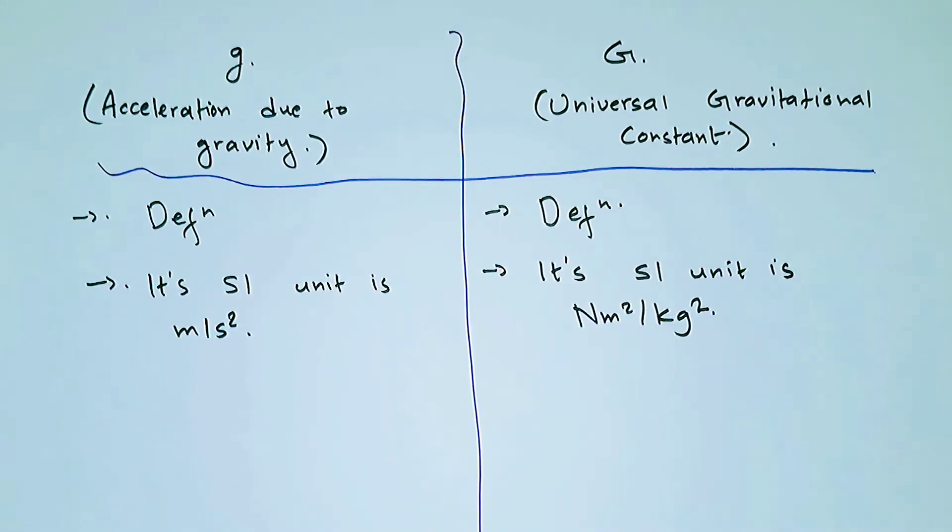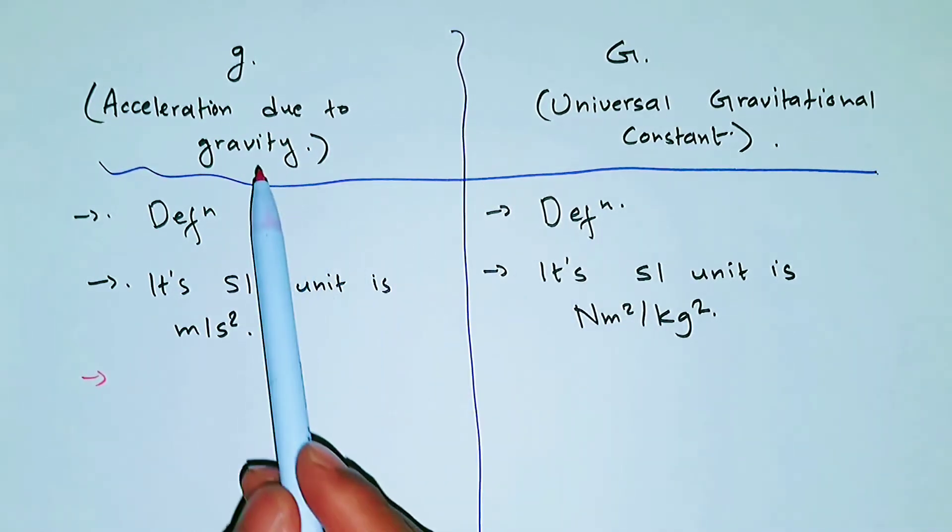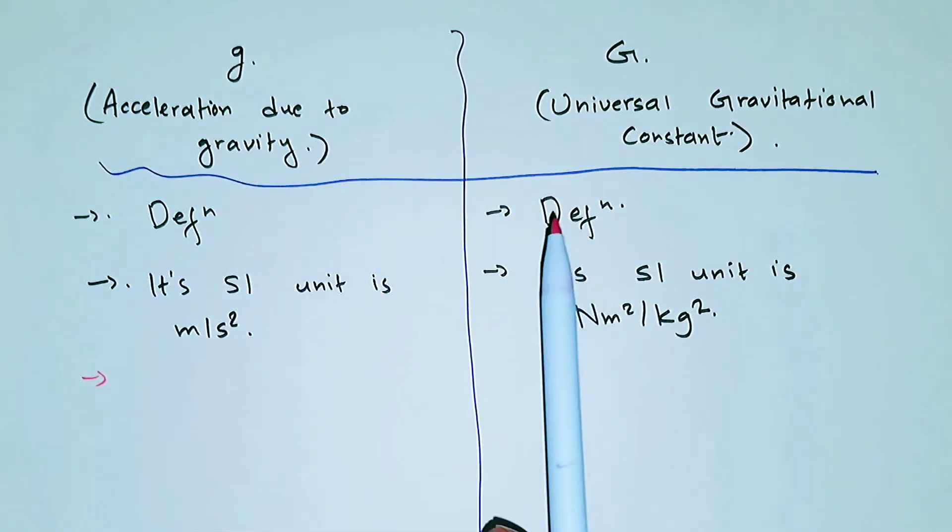And then another difference that we can add here is the acceleration due to gravity changes from place to place because the gravity is different on different places. So in Jupiter the gravity is high.